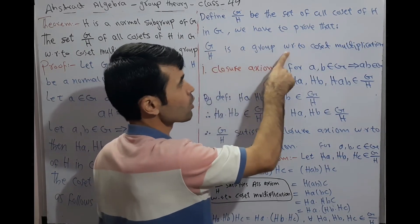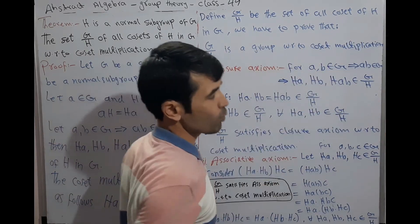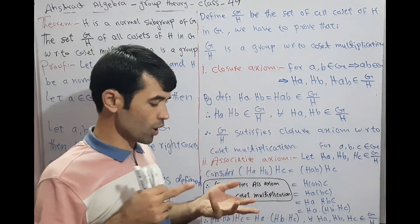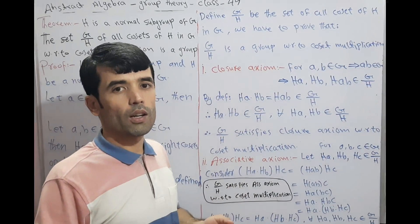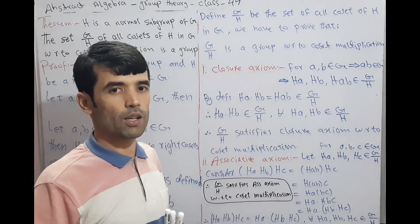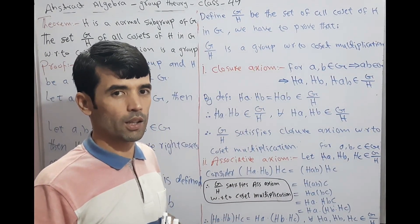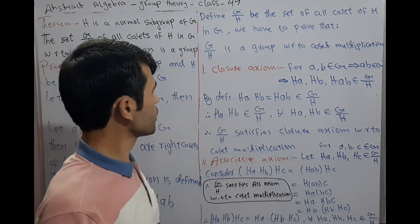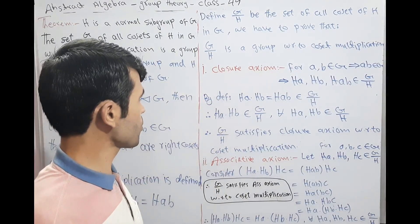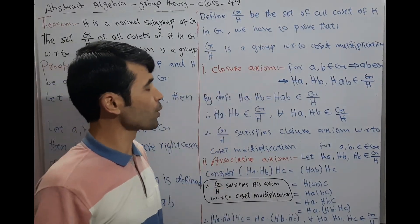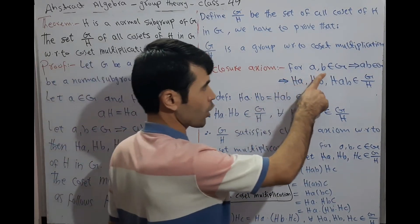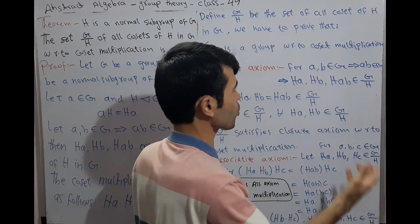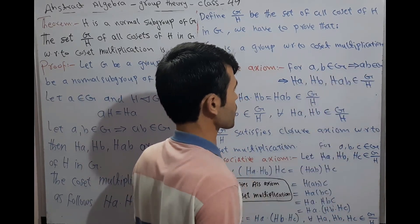We have to prove that G by H is a group with respect to coset multiplication. We need to verify that the group axioms hold: the closure axiom, the associative axiom, existence of identity, and existence of inverse all hold in G by H. First, the closure axiom.